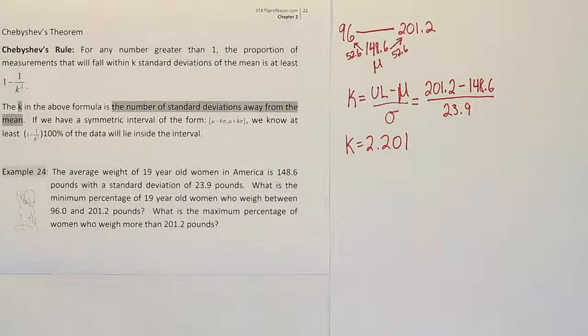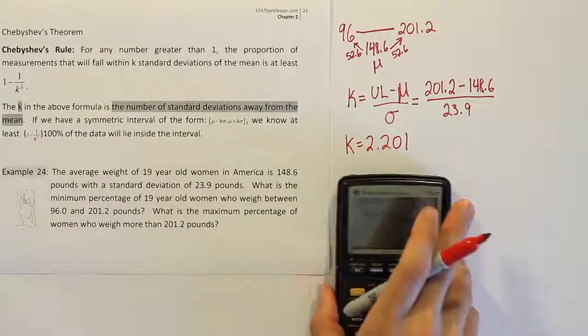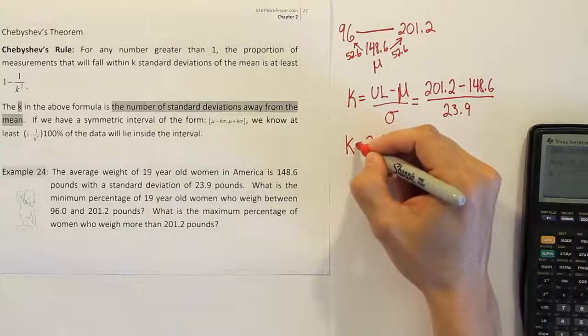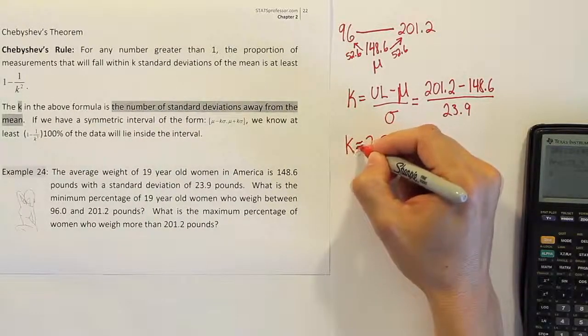I'm going to approximate that as 2.201. That should be good enough and should work fine in our formula. You could of course use the entire k value without rounding it whatsoever. And that's probably what I will do actually in my calculator. Just for the purpose of writing it down, I wanted to keep it shorter. But I will probably use the full number in my calculator for the next step.